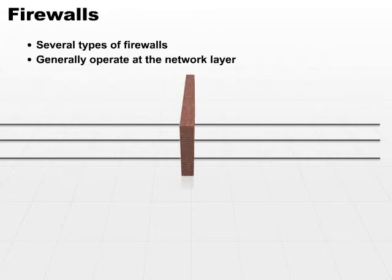But they generally operate at the network level. Now, the second most common type of firewall is going to operate at the application layer, but we're going to focus mainly on the network layer.